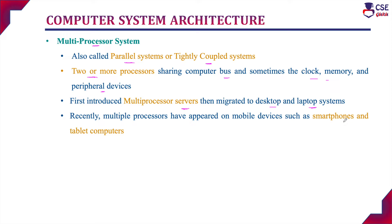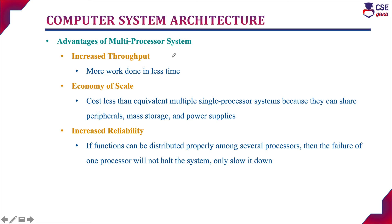In case of a single processor system, at a time only one task we can assign and execute. In multiprocessor system, since it consists of many processors, we can assign many individual tasks to each CPU and complete many tasks at a time. The advantages of multiprocessor system are: increased throughput, economy of scale, and increased reliability. Increased throughput means since it consists of many processors, we can complete more tasks in less time. Economy of scale means it costs less than the equivalent multiple single processor systems.